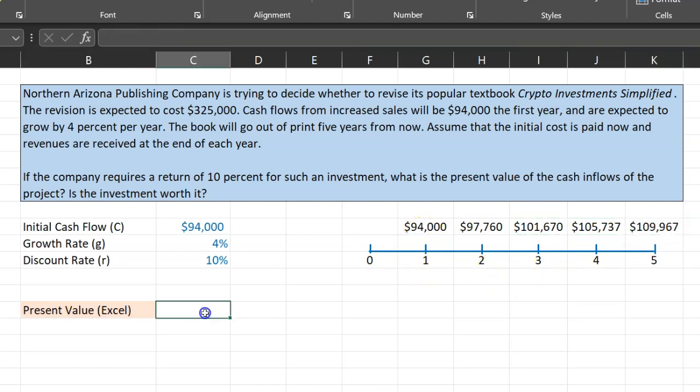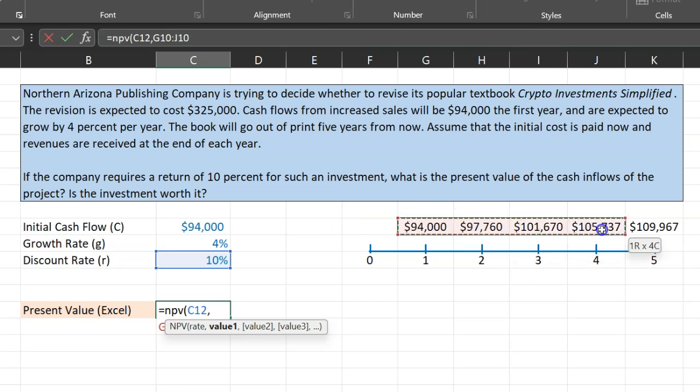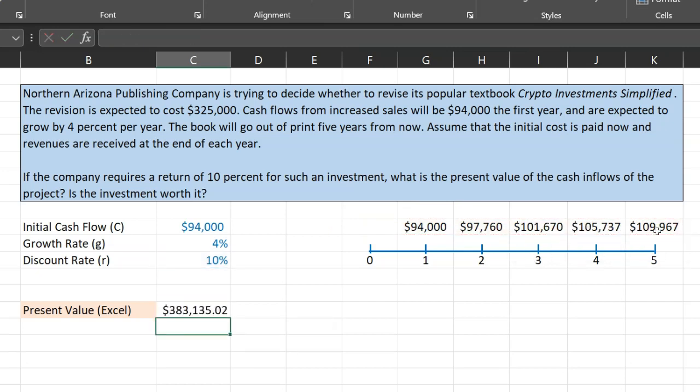So if you're interested in calculating the present value of this annuity, one simple way is simply to calculate the present value of this cash flow. So all you do is equal to NPV. Your discount rate is 10%. And the cash flows that you're expecting starting from year one are all these cash flows, literally just highlight all these numbers. And really, that's it. The present value of this annuity is $383,135.02.